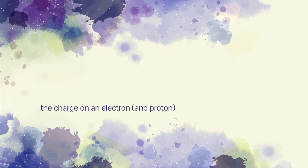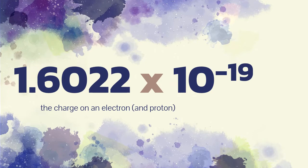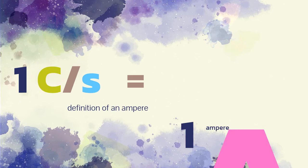The charge on an electron and proton is defined as 1.6022 times 10 to the negative 19 coulombs. A rate of charge flow equal to 1 coulomb per second is the definition of 1 ampere of current.